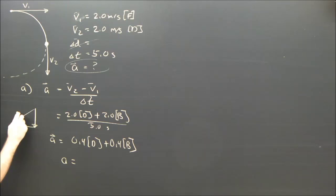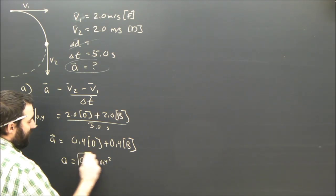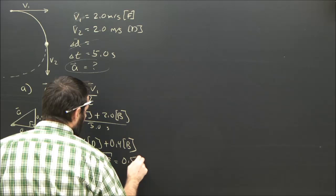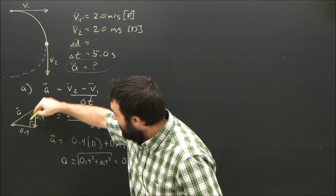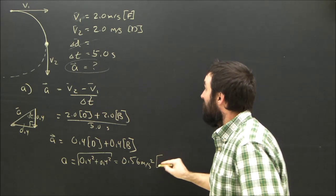Again, the acceleration, A, will just be 0.4, and this is 90 degrees, and 0.4. So it'll just be 0.4 squared plus 0.4 squared, square rooted. So the magnitude of the acceleration will turn out to be 0.56 meters per second squared. And what direction? Well, it's an isosceles triangle, so obviously this angle is 45 degrees.